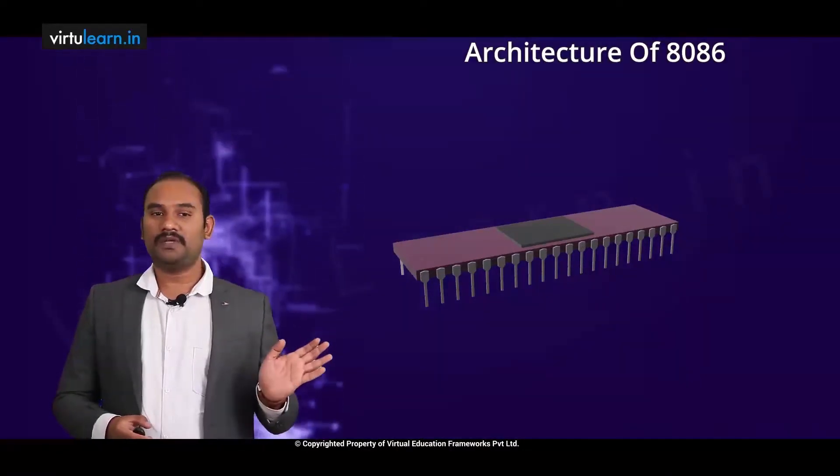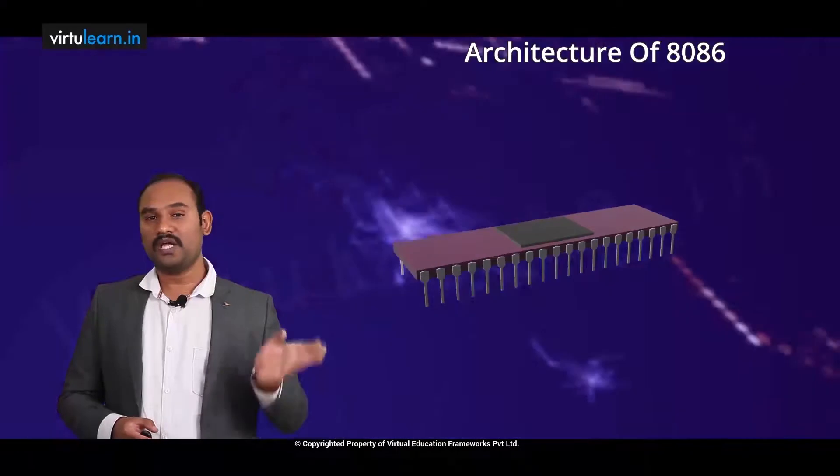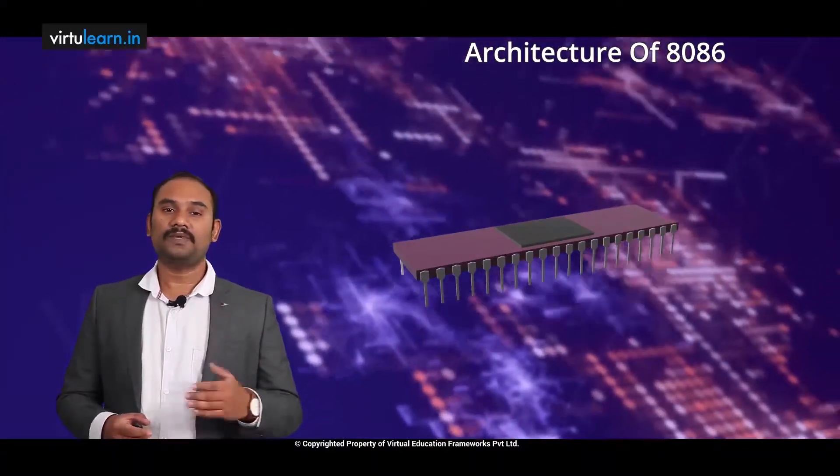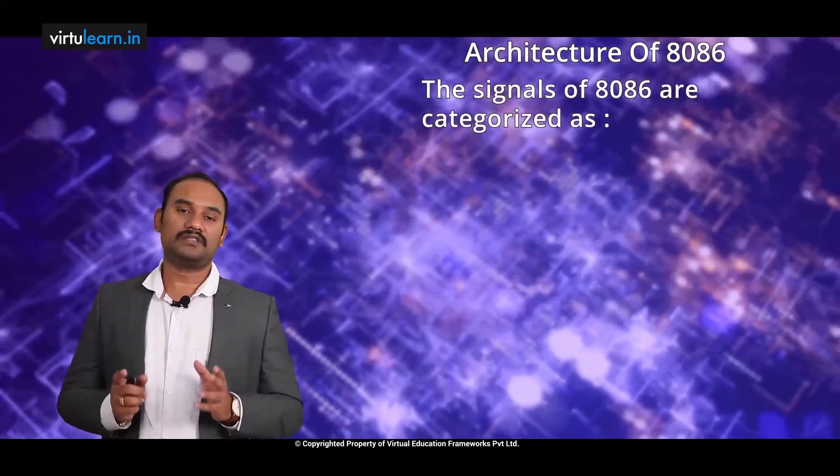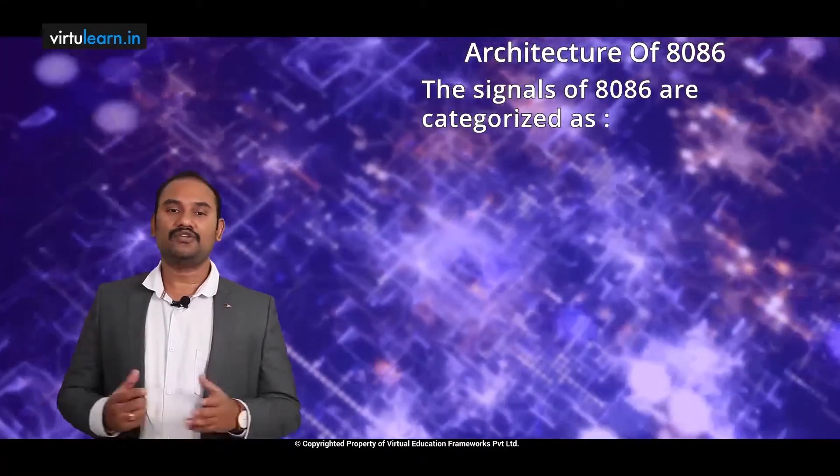So it may be 40 pins, but the signals are more than 40. Some pins are used for multiple purposes. Broadly understanding, the signals of 8086 are categorized into three types.